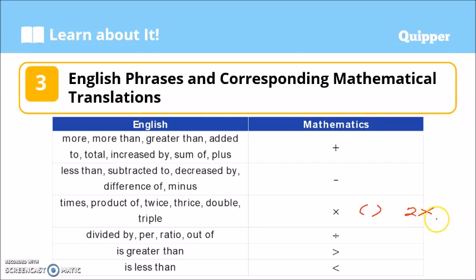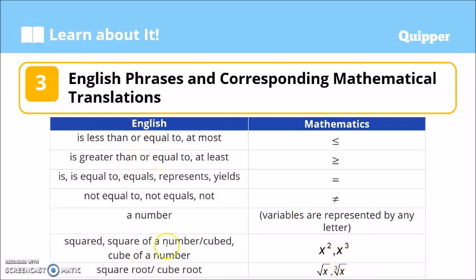The phrases 'divided by,' 'per,' 'ratio,' or 'out of' mean division. Note that fractions also mean division. 'Is greater than' has its corresponding symbol, and 'is less than' has its symbol. We also have 'is less than or equal to' (or 'at most') and 'is greater than or equal to' (or 'at least'). The equal sign corresponds to English phrases like 'is equal to,' 'equals,' 'represents,' or 'yields.'